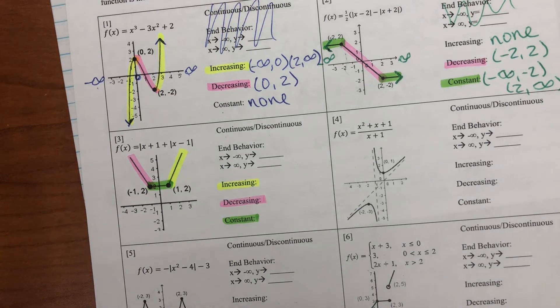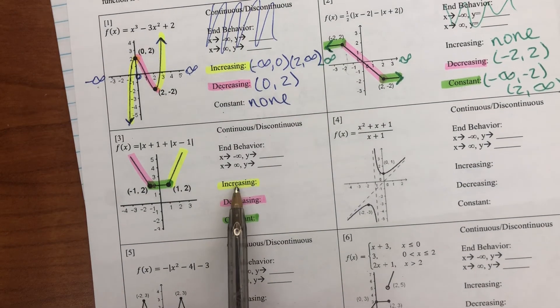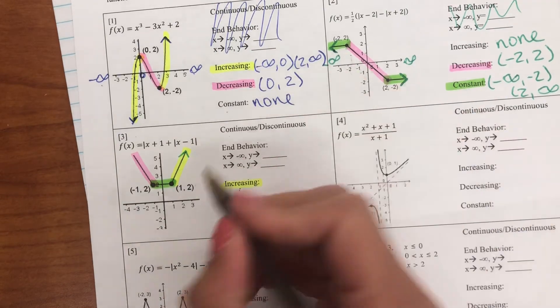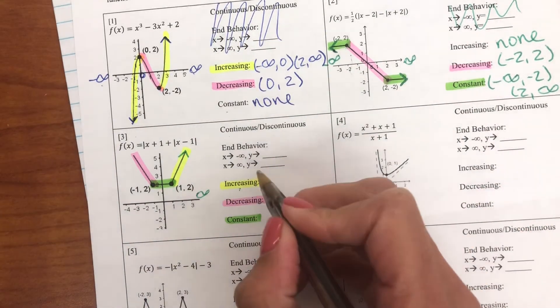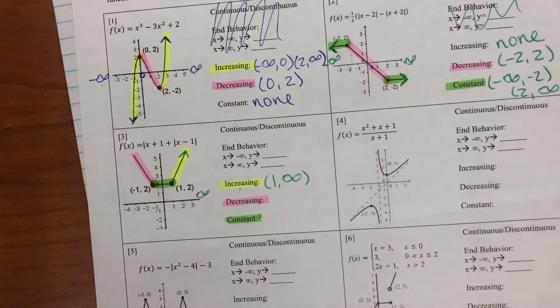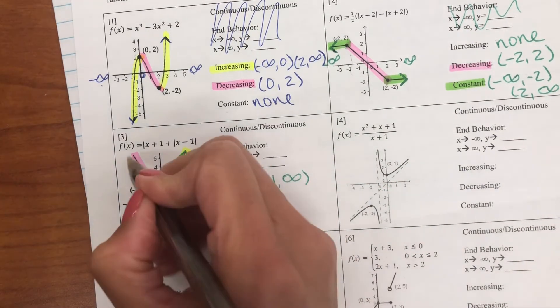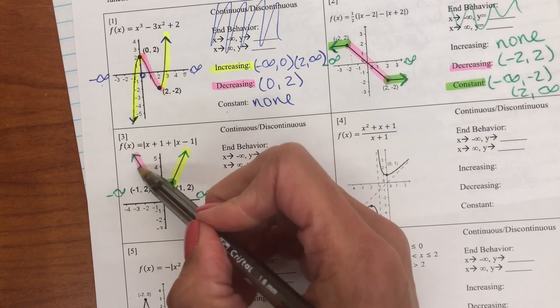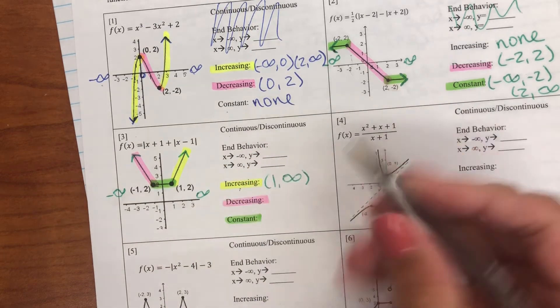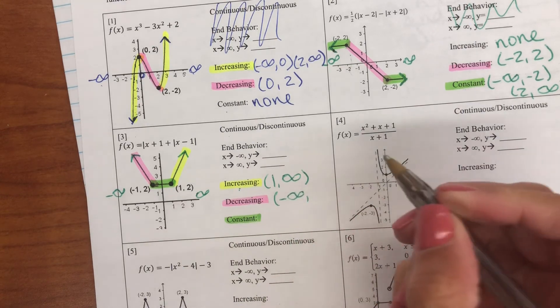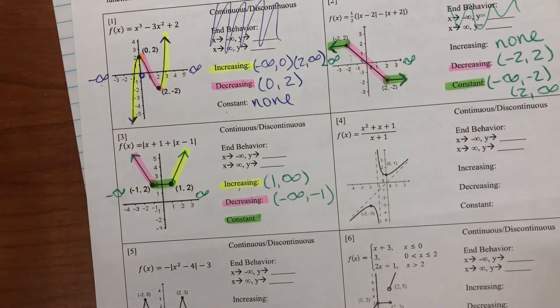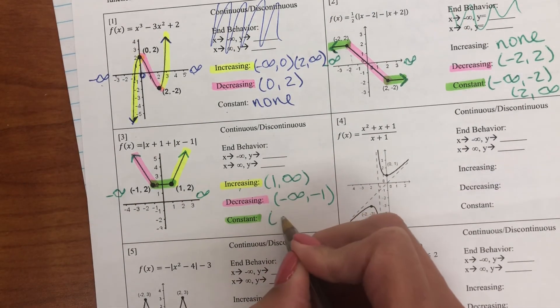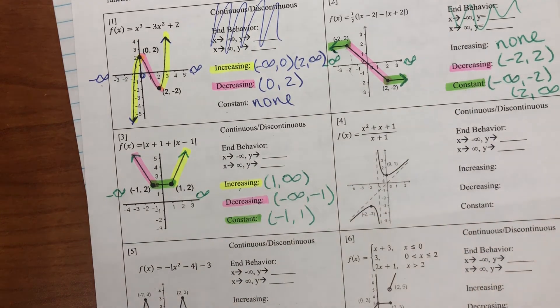Now we're ready to write our intervals. I'm going to start with increasing. It starts at one and it keeps going on to infinity. Use parentheses. Decreasing starts at negative infinity and down to negative one. And then constant, negative one to positive one.